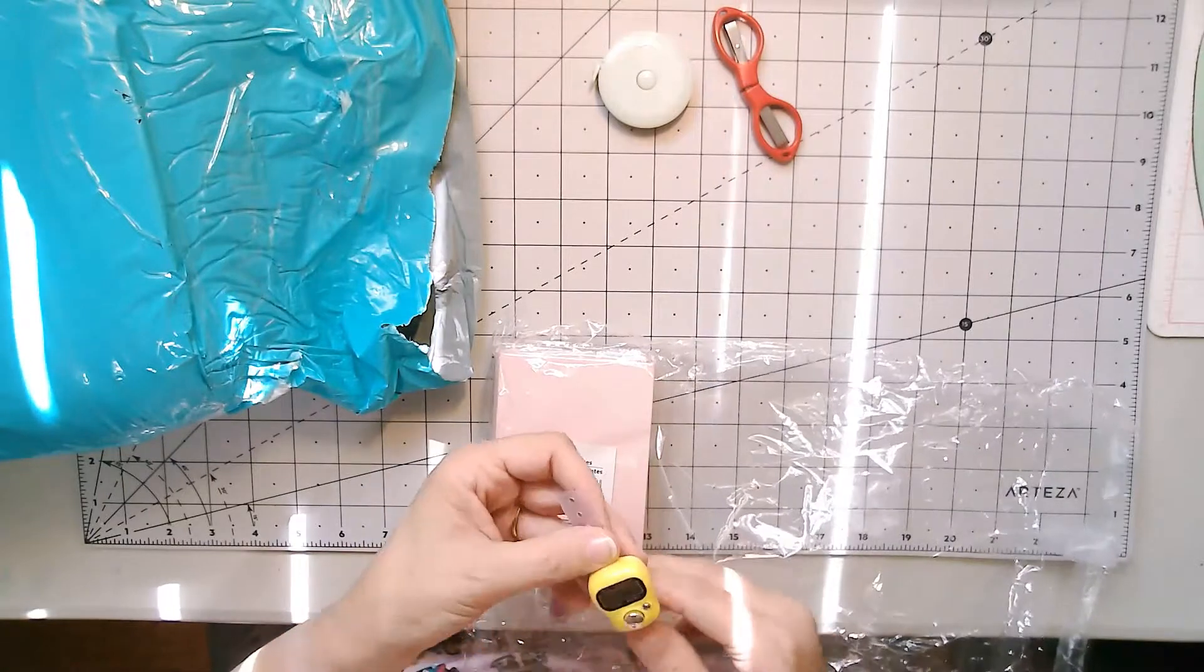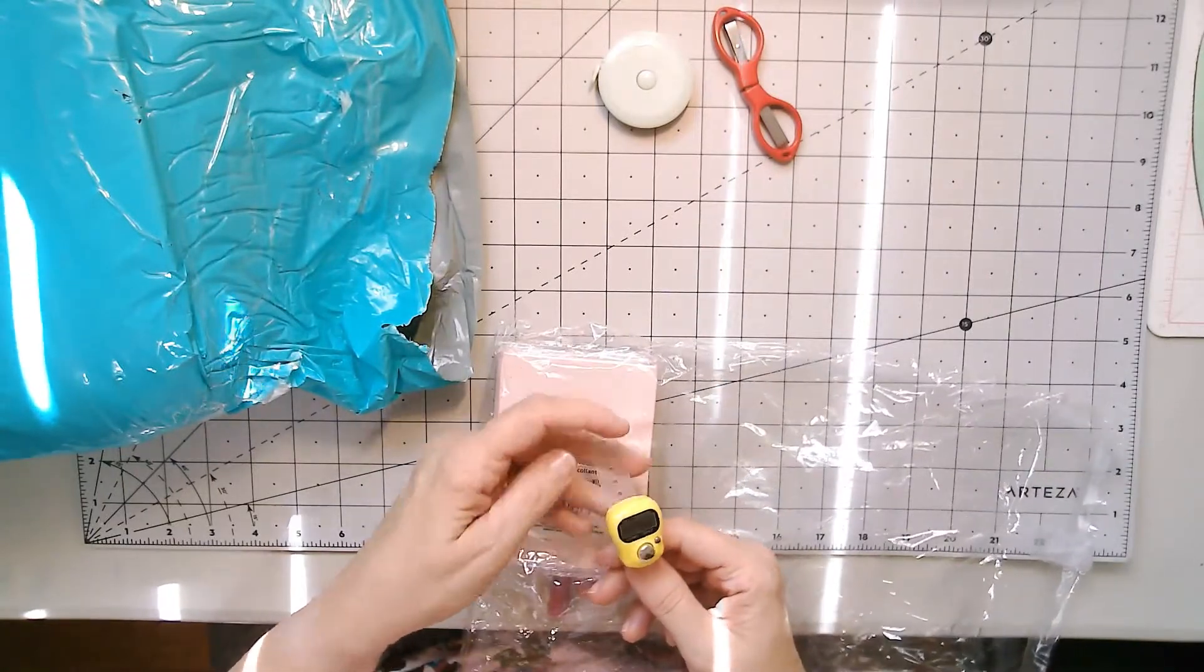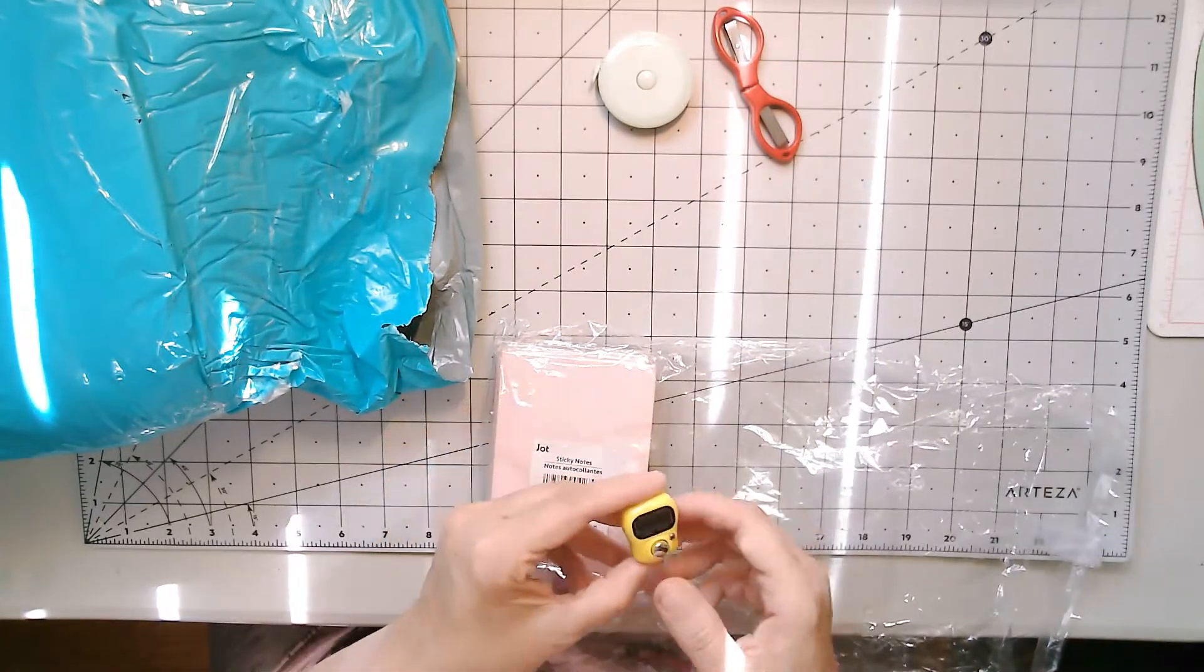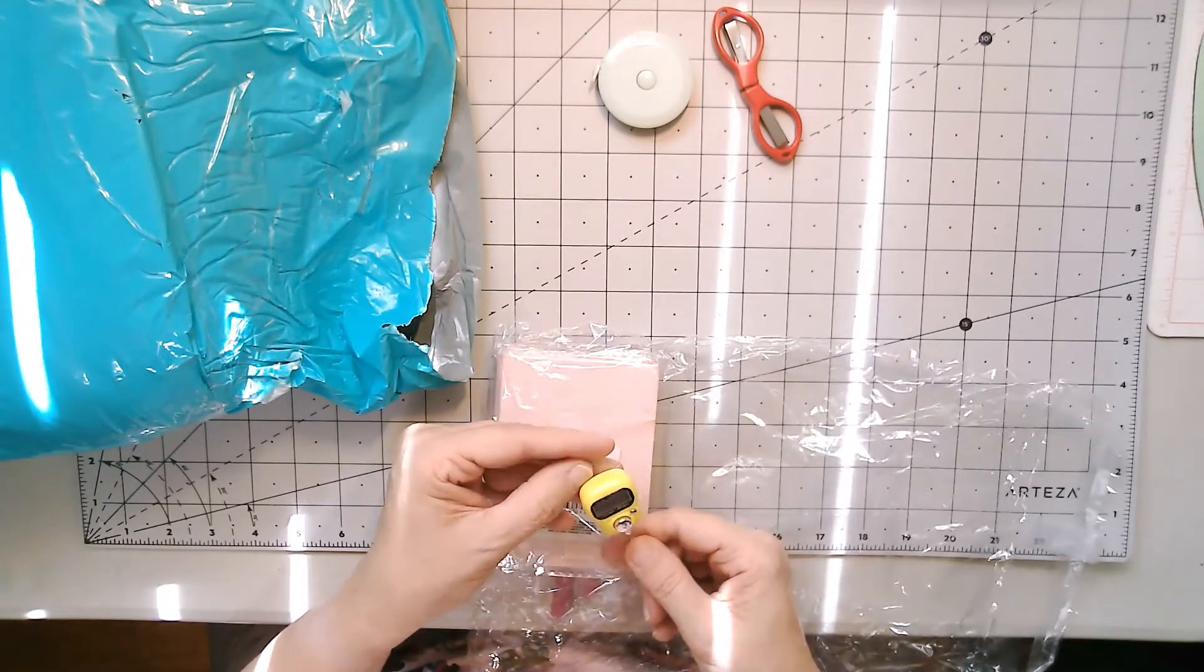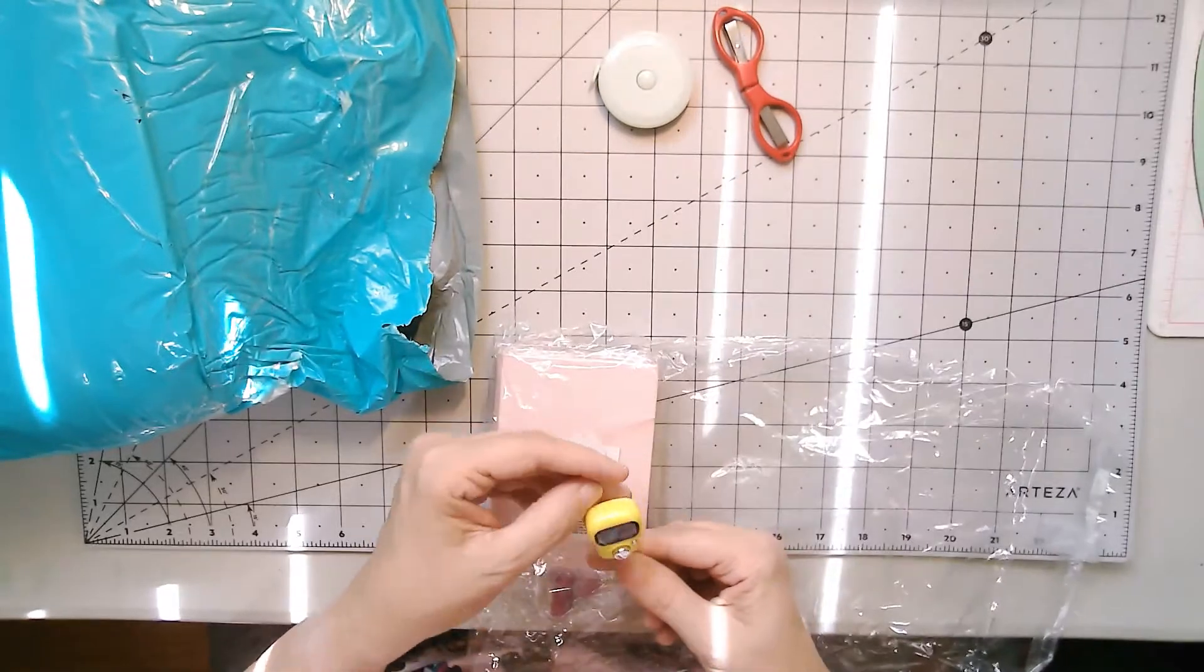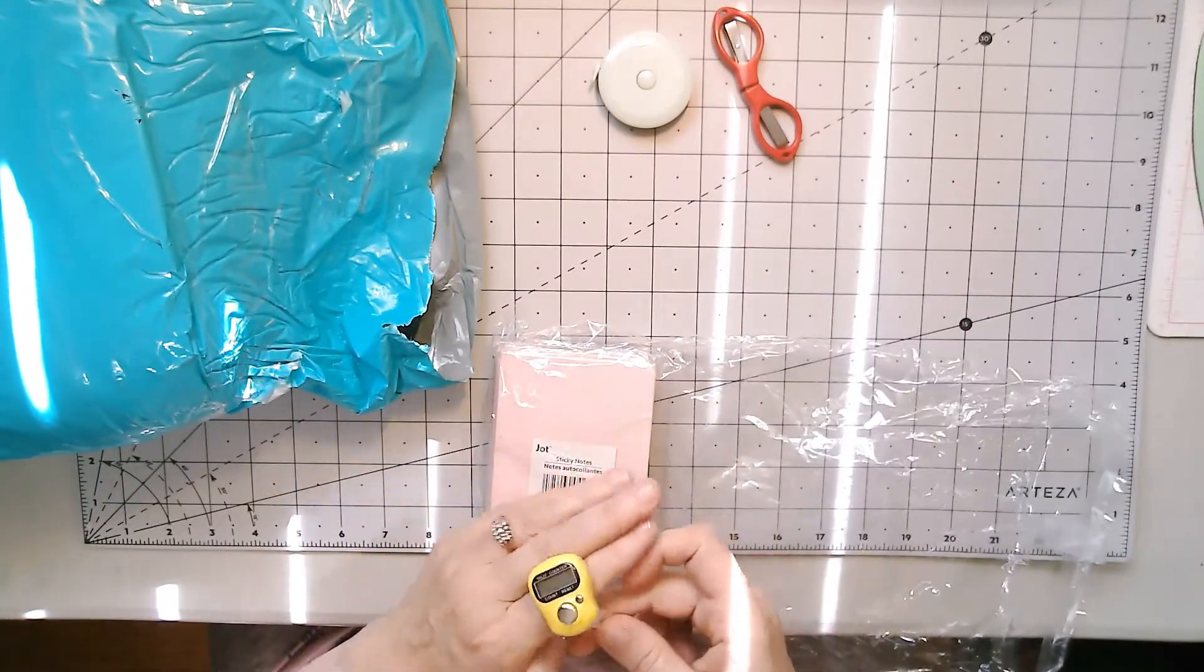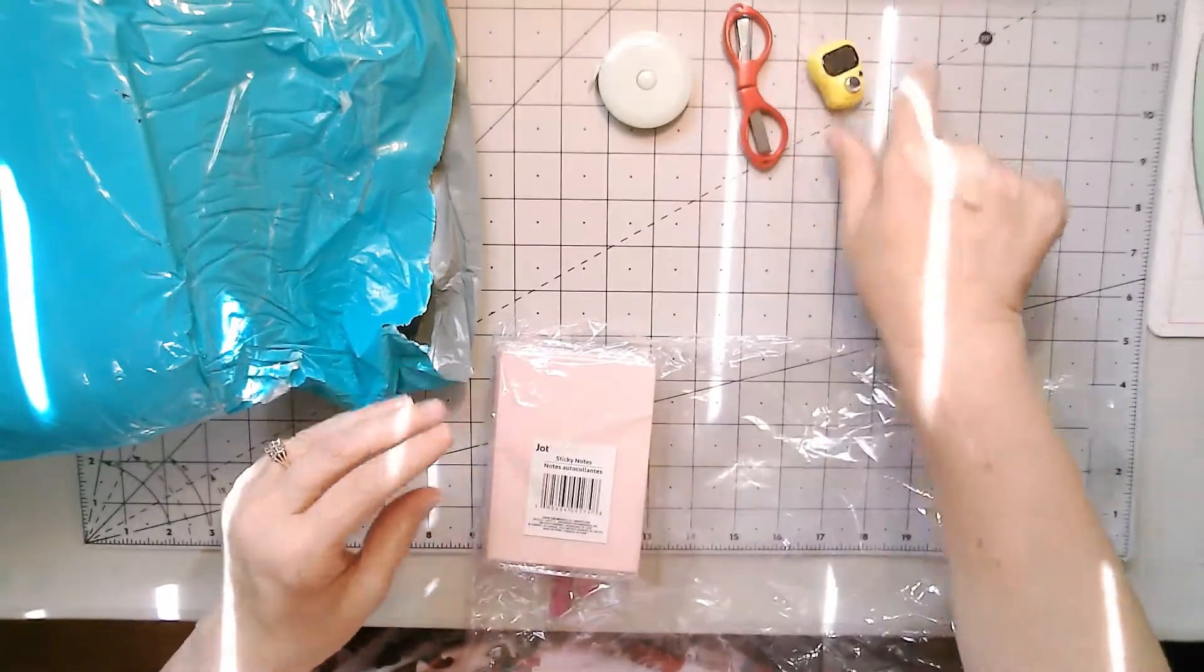And then this is a counter. See, so I could keep track of my rows. Yeah, for my rows. And this can go on my finger. So there's that.